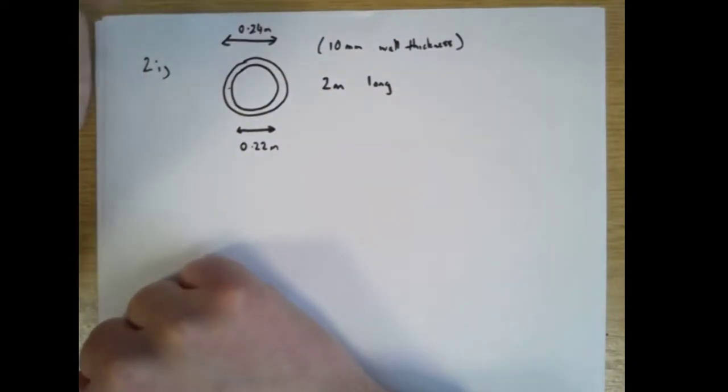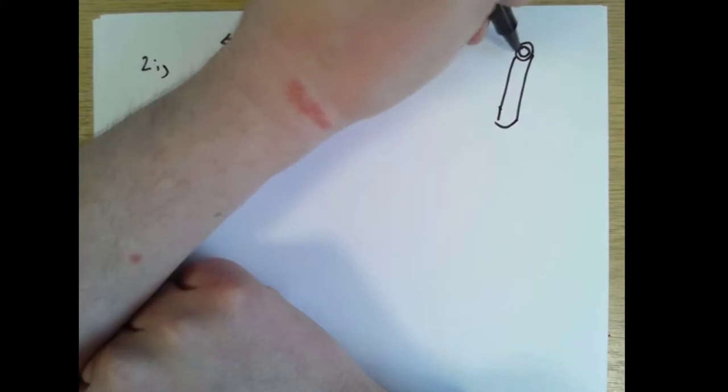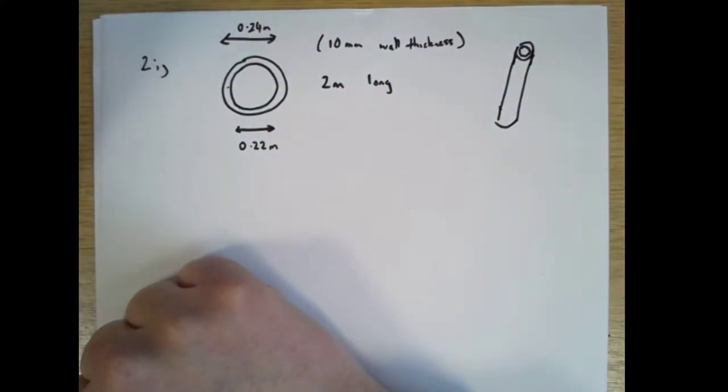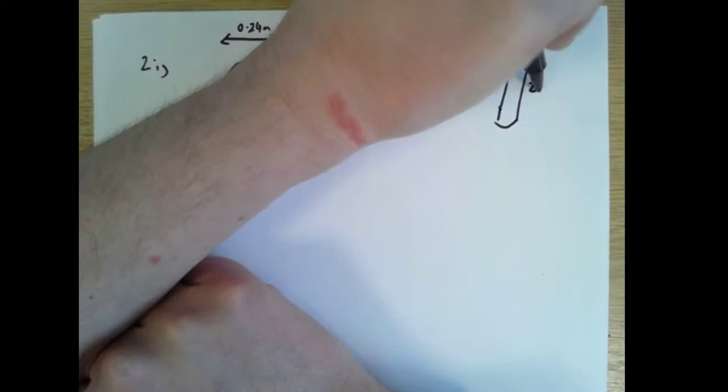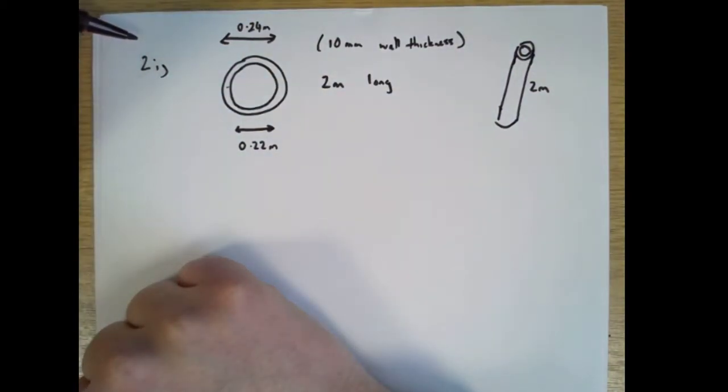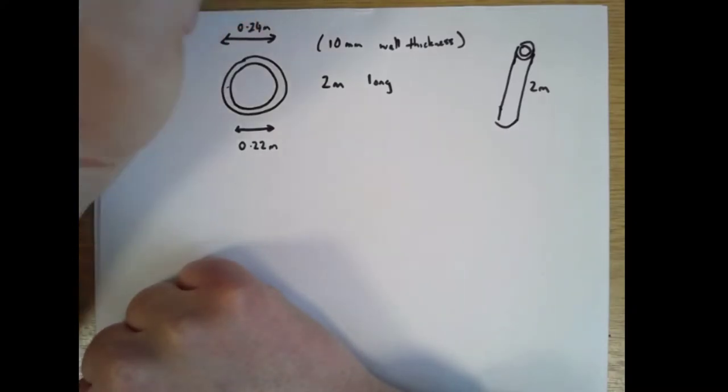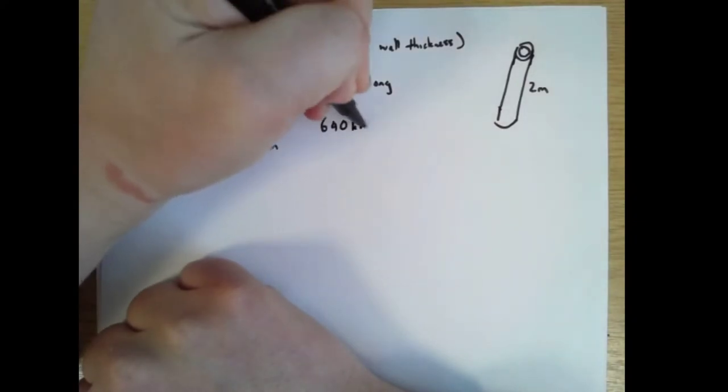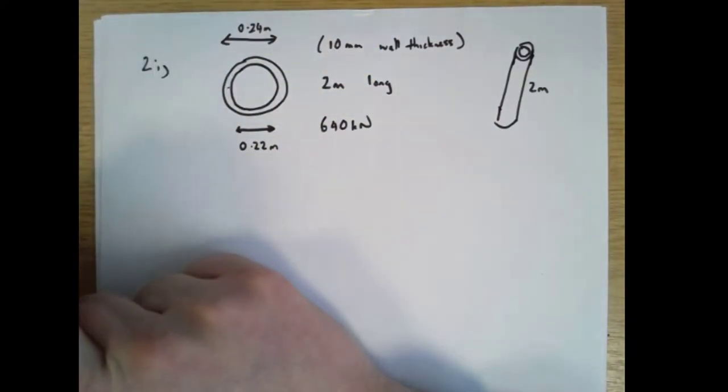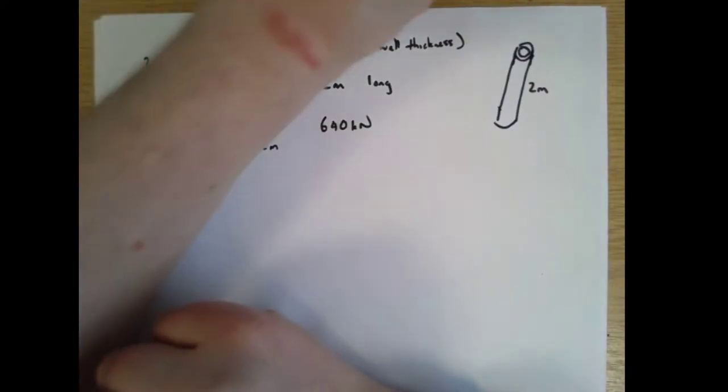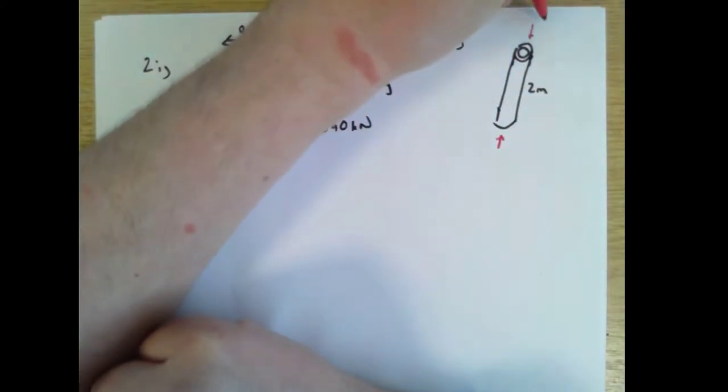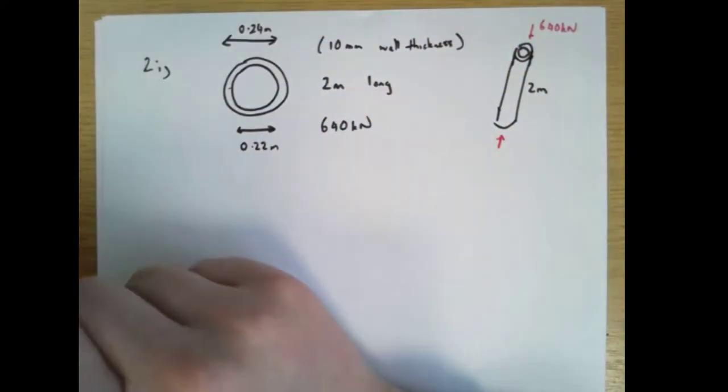The inside diameter, there's 10 millimeters here, 10 millimeters there, so it's 20 millimeters less. So that's 0.22 meters inside diameter. 2 meters long. That's sort of into the page in this direction. The pipe overall looks like that, where that length there is 2 meters. And it's carrying a 640 kilonewton centric axial load, 640 kilonewtons.